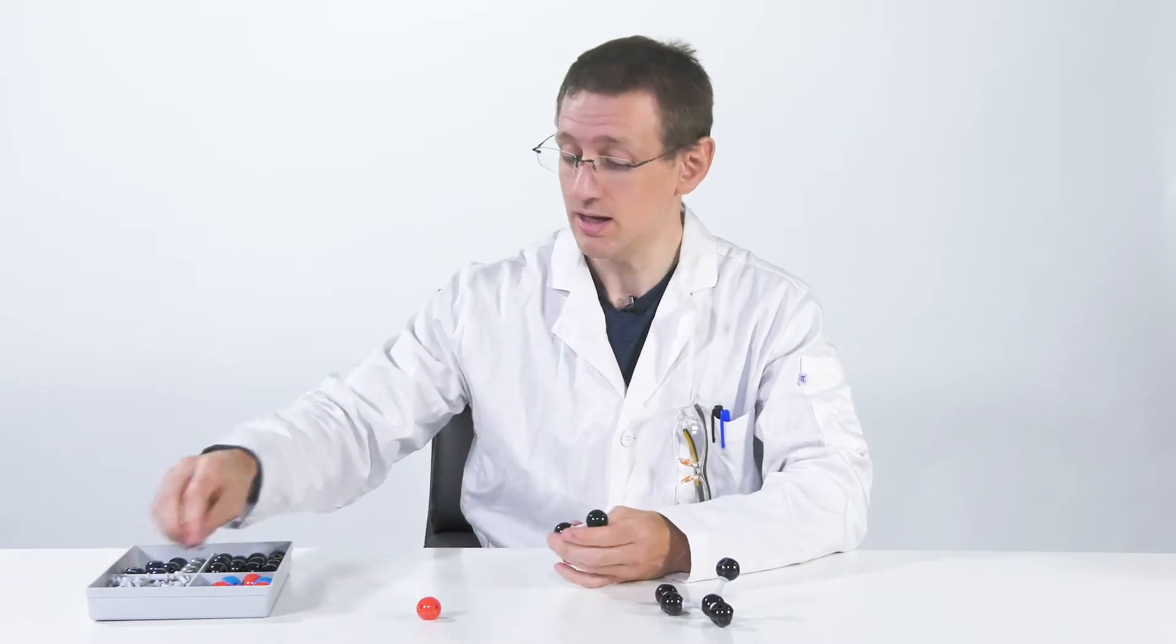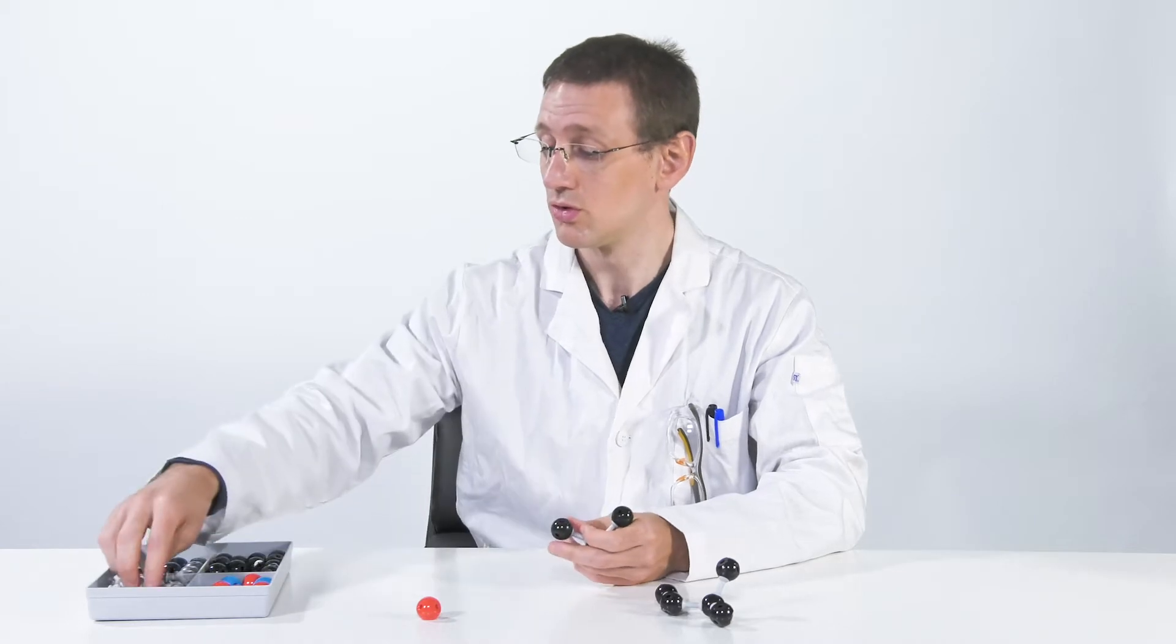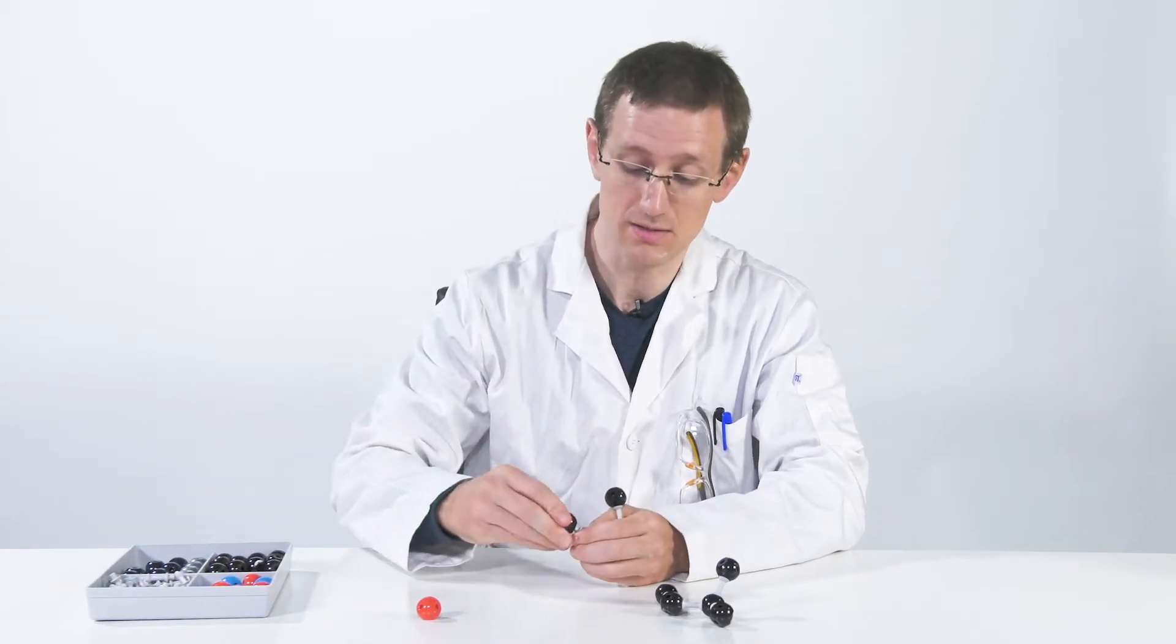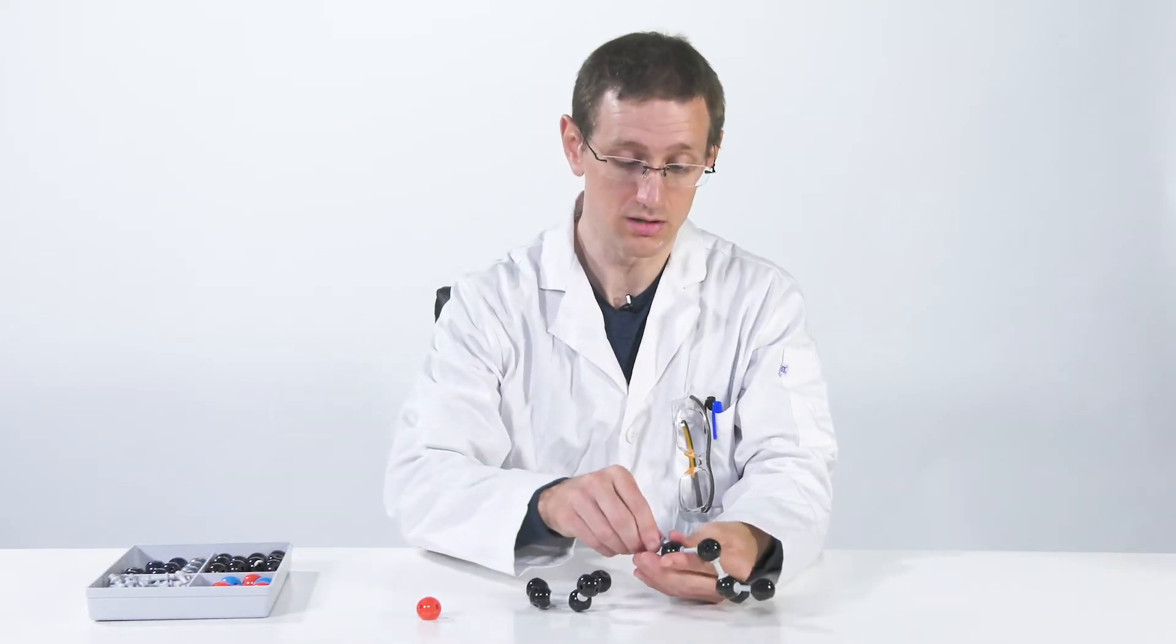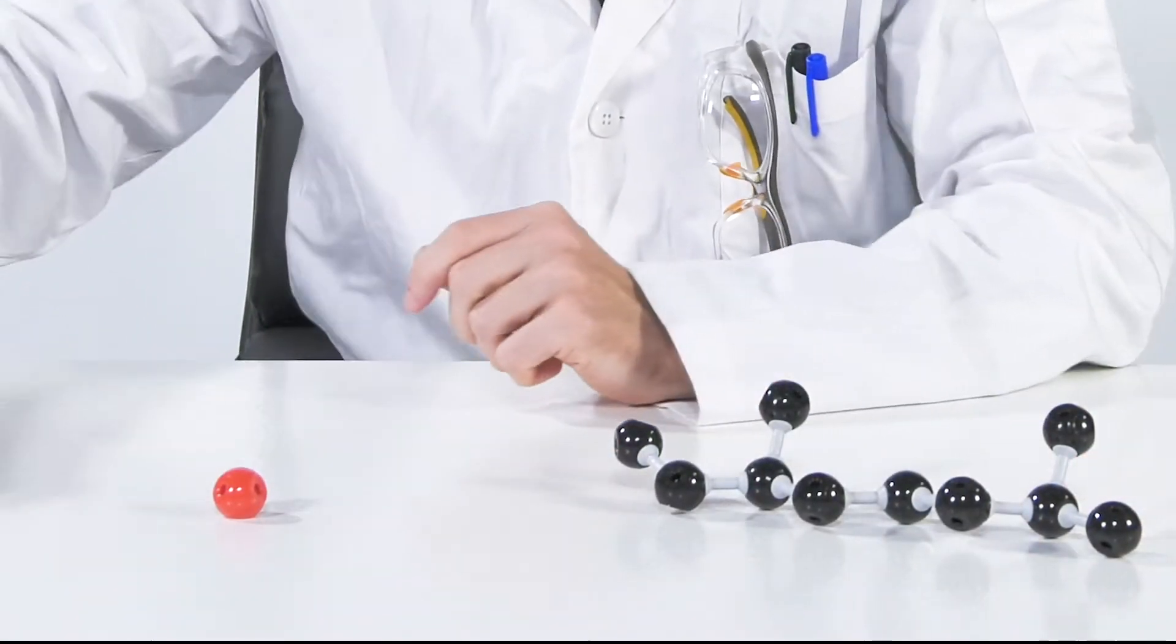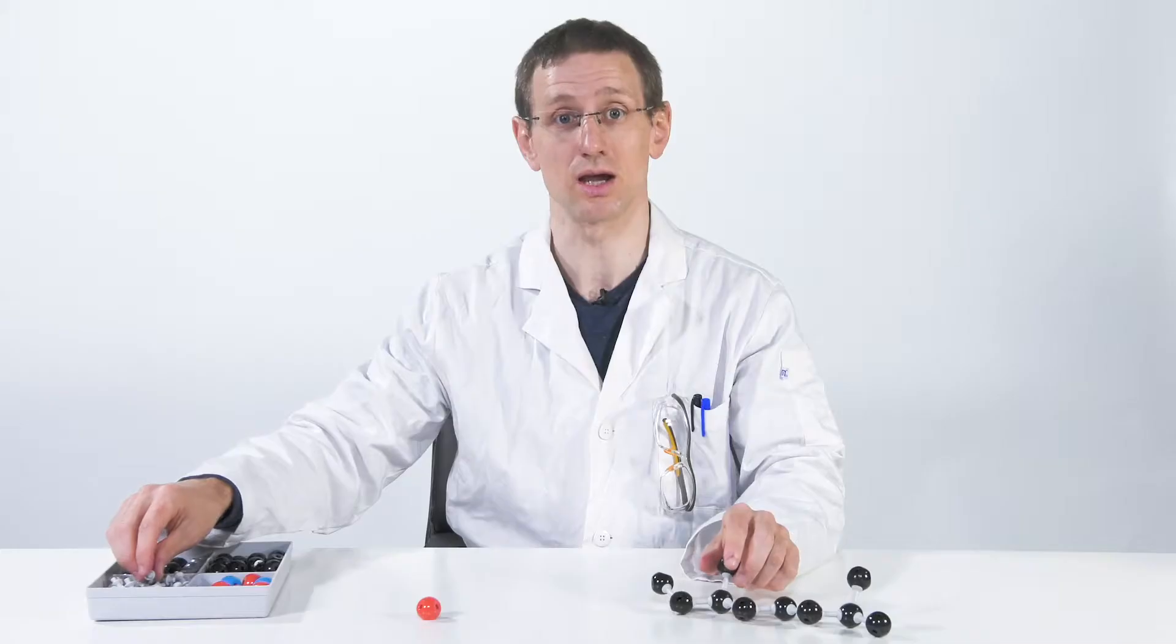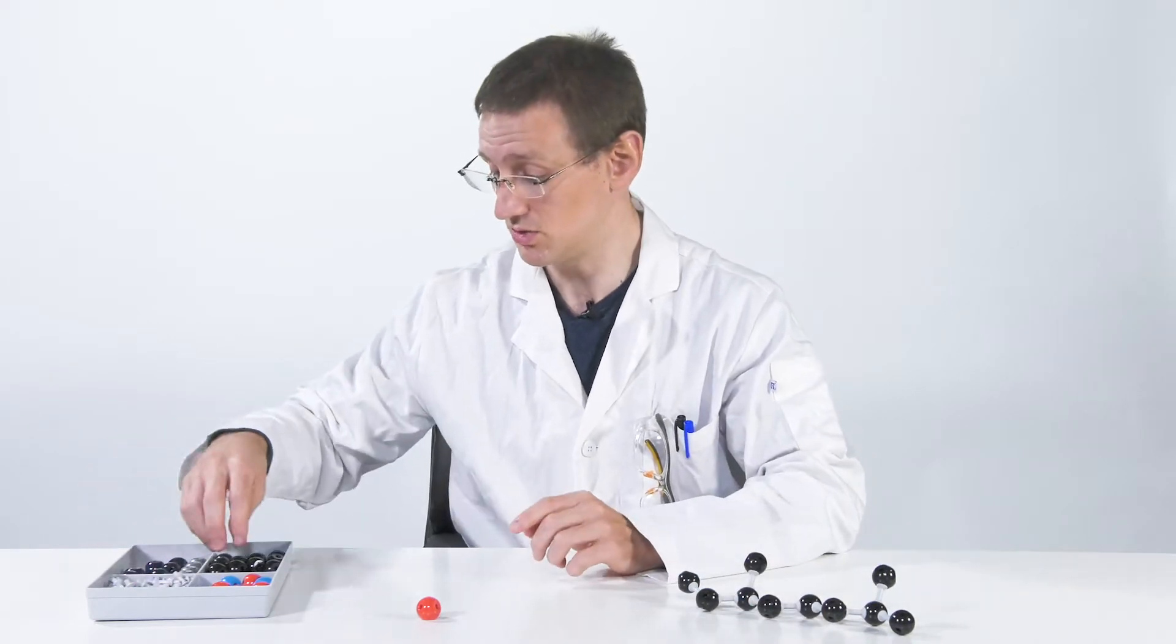And not only are they both present in the cannabis plant, but they also are related in the structure in that if I take two isoprene units and I stick them together, like so, I created myrcene, which is one of the more abundant terpenes in the cannabis plant, but I will need this part to make THC.